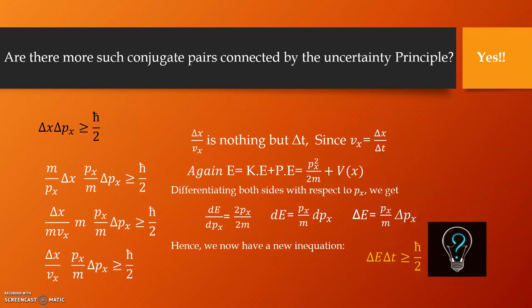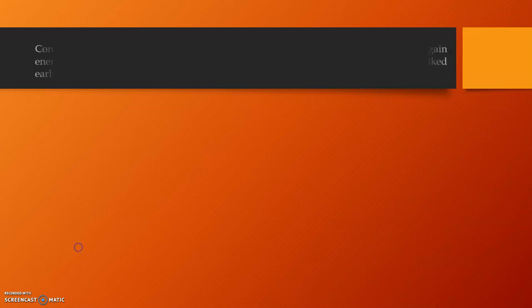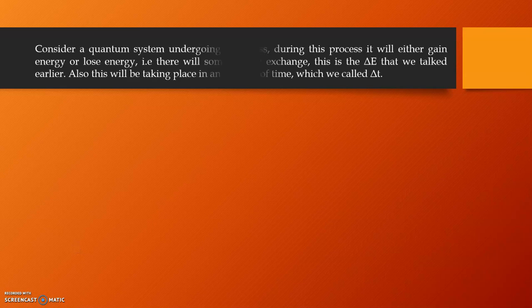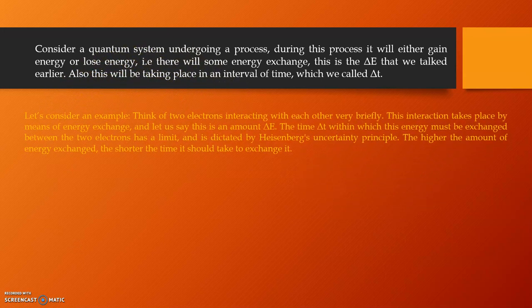But hold on, what is this energy and what is the time that we are talking here? Consider a quantum system undergoing a process. During this process, it will either gain energy or lose energy. That is, there will be some energy exchange. This is the delta E that we talked earlier. Also, this will be taking place in an interval of time which we call the delta t.